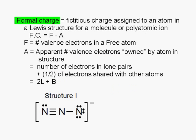Formal charge is a fictitious charge assigned to an atom in a Lewis structure for a molecule or polyatomic ion. We can calculate it using this formula, F minus A.